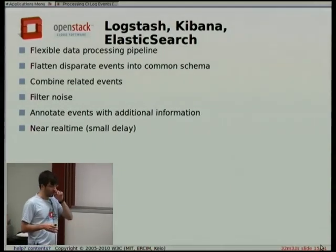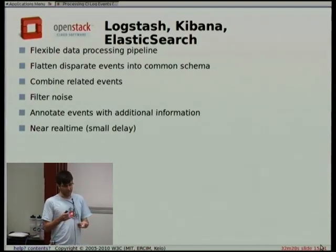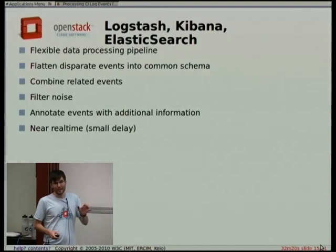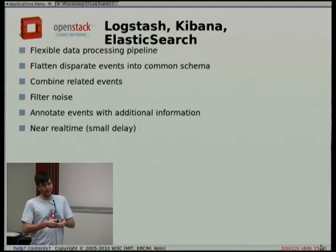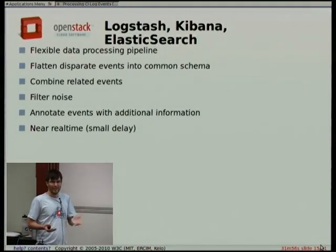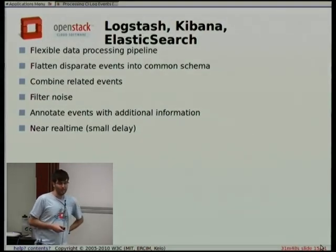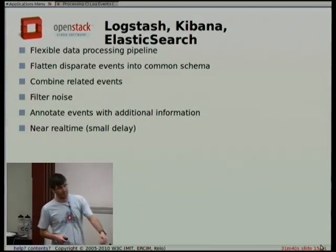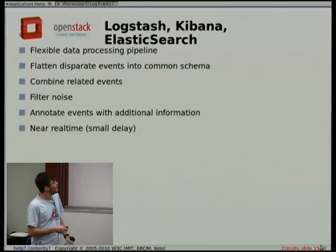Things that are important for us are flattening these disparate events into a common schema — we've got logs coming from syslog, Nova, Swift, Apache, all in different formats, but we want to query them in the same way. We also want to combine related events: a stack trace that might show up as 10 different log lines — we need to combine those together as a single entity. Filtering noise is important because we can't index everything. And we can annotate events with additional information — at the end of the talk I'll discuss how we're doing statistical analysis and annotating every log line with information about whether we think it's odd. Typically data gets completely through the pipeline in about a minute or less.